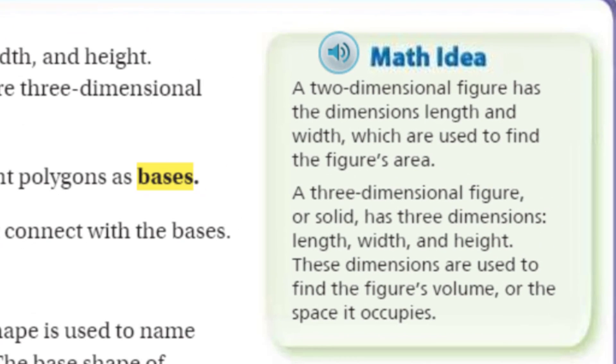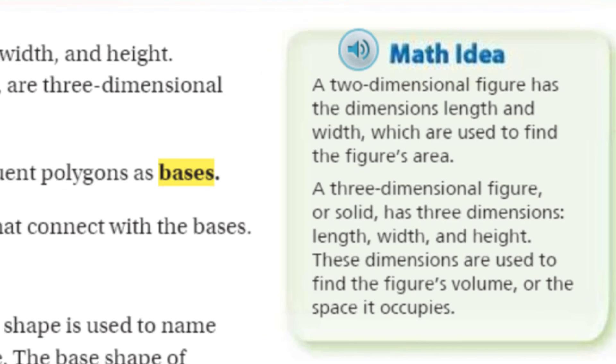I really need to employ a complete team. All right, so it says here a two-dimensional figure has the dimensions length and width, which are used to find the figure's area. You may recall when we do a triangle or quadrilateral, it just has two dimensions—length and width. Now it says a three-dimensional figure or solid has three dimensions: length, width, and height. These dimensions are used to find the figure's volume, or the space it occupies—like what's inside.